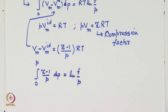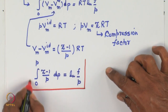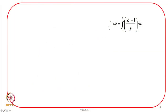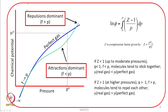This is the result we were looking for. Going back to the slide: log phi = integral from 0 to P of (Z−1)/P dP, where phi = F/P and Z is the compression factor. So in order to obtain the fugacity coefficient, we need information on the compression factor. For example, for a van der Waals gas we can derive an expression for Z and substitute it into this integral.